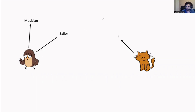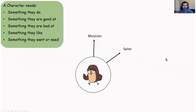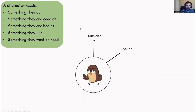So let's start with the Owl. Every character needs something they do, something they're good at, something they're bad at, something they like, and something they want or need. So get a sheet of paper, draw a circle in the middle like on the screen, and then we're going to answer these questions. Let's have a look at the first one: something they do. Well, we already have that — musician and sailor.